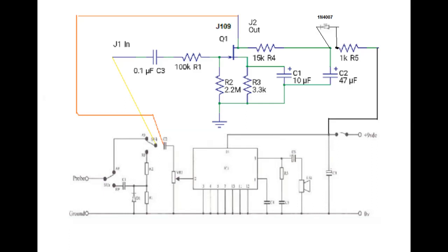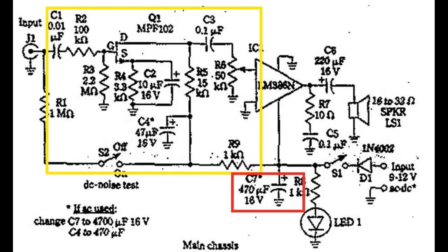But it always bothered me that I'd have to do something like that, especially because the original circuit used an LM386 and evidently didn't have trouble with it. Just as I was getting ready to put this together, I went back and revisited it and finally figured out why. In the yellow is the circuit that I borrowed, which is everything you needed for the JFET front end.